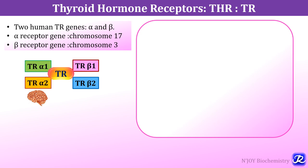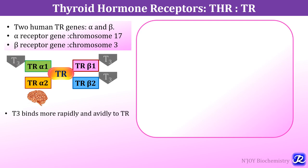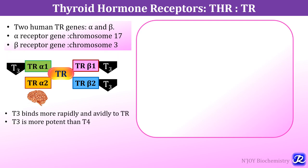Alpha 1, beta 1 and beta 2 are predominantly responsible for mediating thyroid hormone action, which is critical for normal development, growth and metabolism. Alpha 2 is present in the brain. T3 binds more rapidly and avidly with the thyroid receptors, and that is why it is more potent than T4.